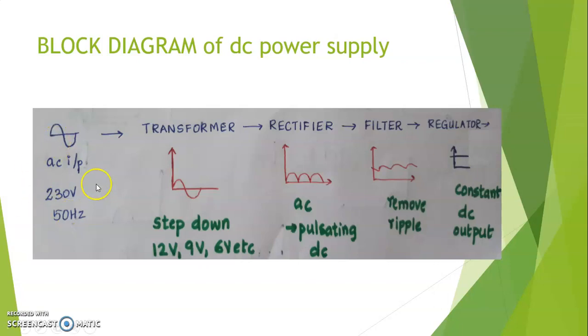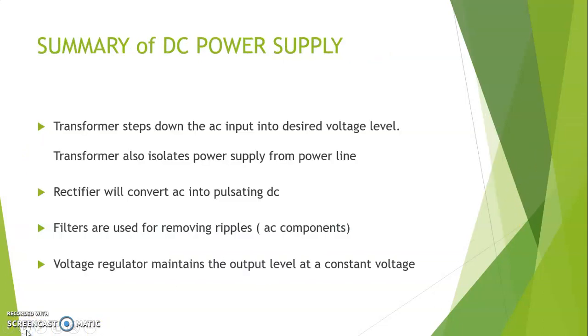Thus, our AC input is converted into a constant DC output. So this is the summary of a DC power supply.